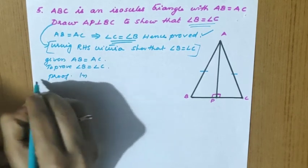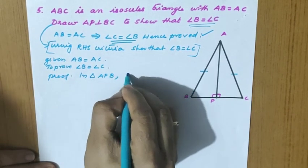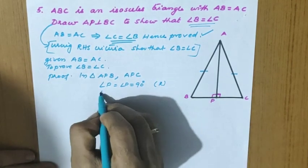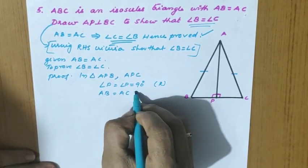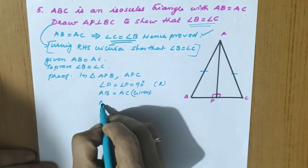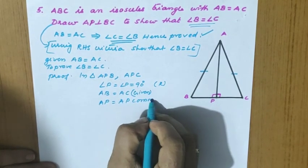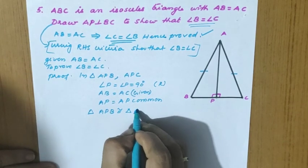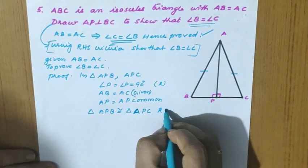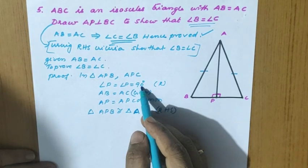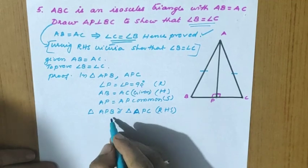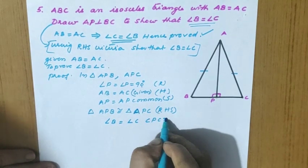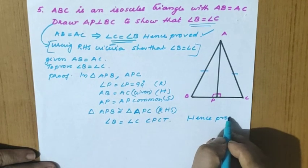But if the question asks to prove using RHS criteria, the proof is different. Given: AB equal to AC. To prove: angle B equal to angle C. In triangle APB and triangle APC: angle P equal to angle P equal to 90 degrees — right angle. AB equal to AC — given as hypotenuse. AP equal to AP — common side.